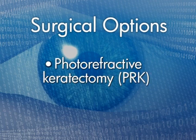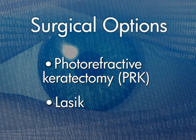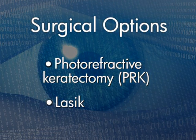We've talked about the correction of astigmatism using glasses and contact lenses. There are surgical options as well. There's PRK — photorefractive keratectomy — where the front surface of the eye is lasered. Or there's LASIK, which involves the creation of a flap, lifting it, treating underneath with laser, and bringing the flap back down.